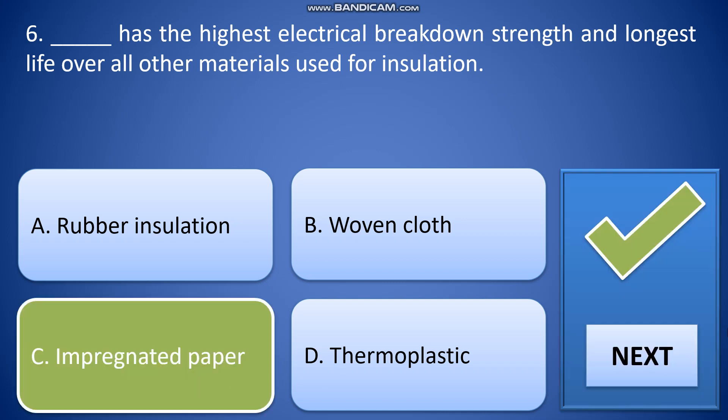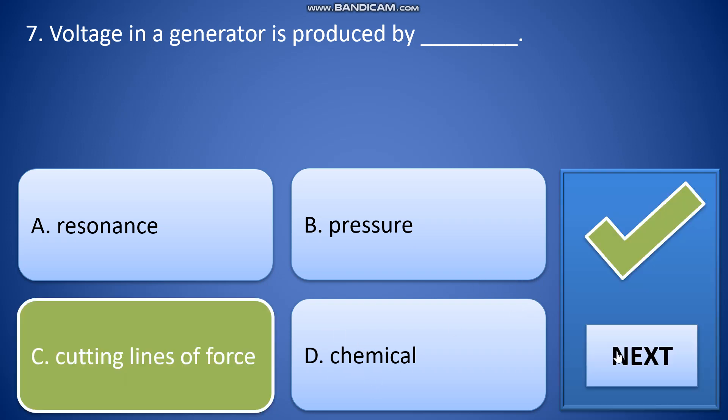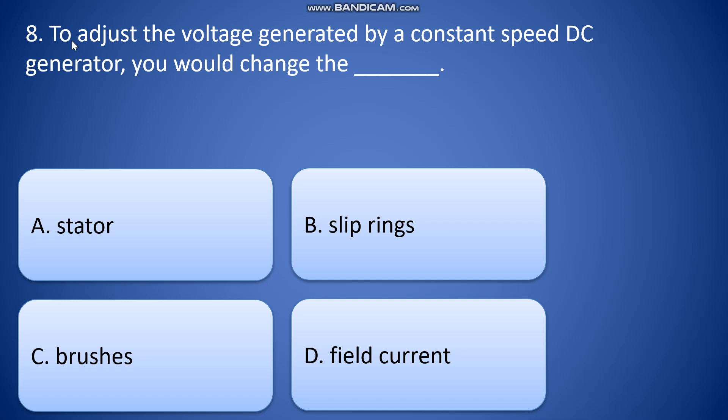Voltage in a generator is produced by blank: resonance, pressure, cutting lines of force, and chemical. So the answer is letter C, cutting lines of force.